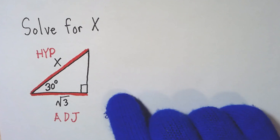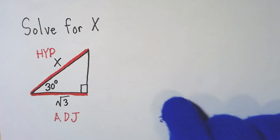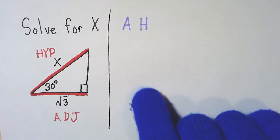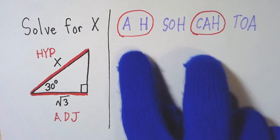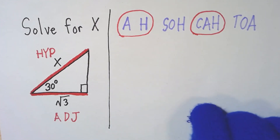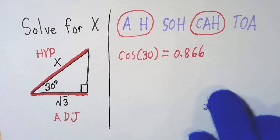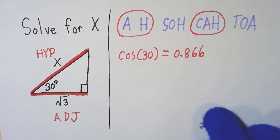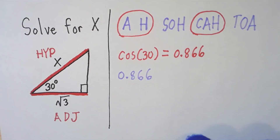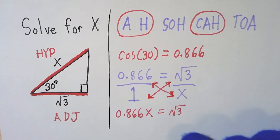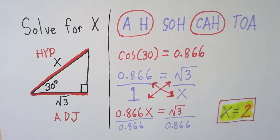Only label what we need and what we have, skip the third side, we don't need it for this math. A and H — is it SOH, CAH, or TOA? I got them people's cosine, you know the game is over. Cos 30 equals 0.866, pay attention and make sure you get this quick. If decimal equals square root of 3 over X over 1, then we cross multiply next.